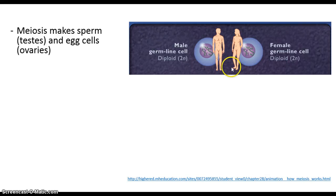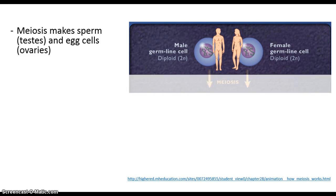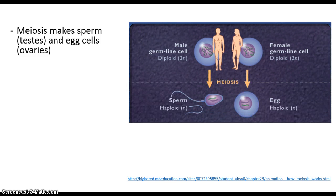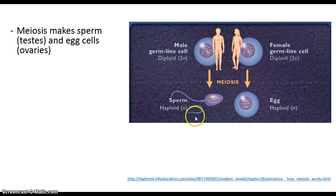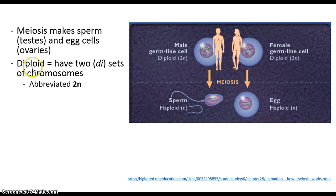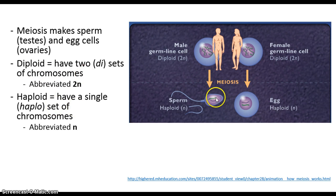Therefore, in males in the testes and females in the ovaries, these cells — the germline cells — go through meiosis to produce sperm and egg. When we say diploid or haploid, we're referring to how many sets of chromosomes there are in each of these cells. Diploid, from the Greek diplos meaning double, means that you have twice as much DNA in this cell as a haploid cell.